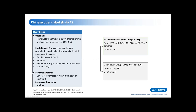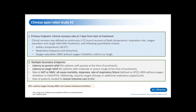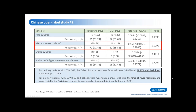Another study from China compared favipiravir with umifenovir, a drug commonly used in China and Russia to treat influenza and other viral indications. The study compared the clinical recovery rate at seven days from start of treatment as the primary endpoint. For ordinary COVID-19 patients, the seven-day clinical recovery rate for umifenovir was 55.8 percent versus 71 percent for favipiravir, and these results were significantly different between the two groups.